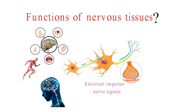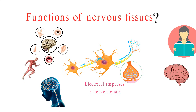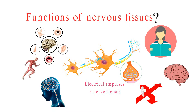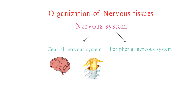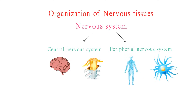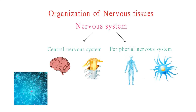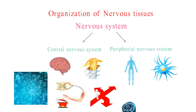Nervous tissue also plays a significant role in higher cognitive functions like memory, learning, and decision-making. The nervous system is divided into two main parts: the central nervous system, which includes the brain and spinal cord, and the peripheral nervous system, encompassing all other nerves and ganglia. Nervous tissue is organized into intricate circuits and networks of neurons. These networks work together to process and transmit information, allowing us to react to our environment, make decisions, and even form memories. And that, my friends, is the world of nervous tissue — a remarkable part of our bodies that enables us to experience the world around us.